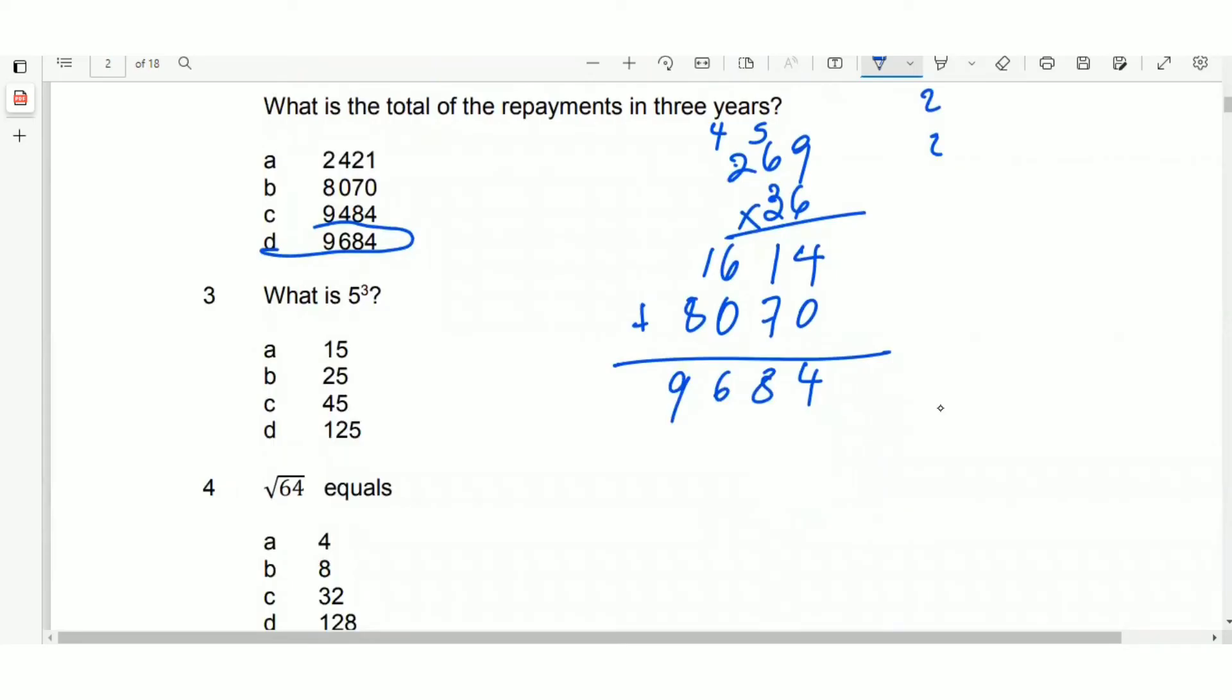What is 5 to the third? 5 to the third means 5 times 5 times 5, and this will give us 125. So you can see that that's the answer there.